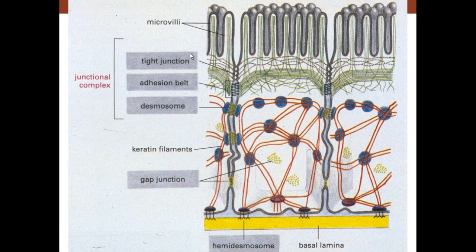The different types of junctions have different associations with filaments. The tight junction — the occluding junction — is the fusion of the plasma membranes of the two cells and is not associated with filaments. The zonula adherens is connected to actin filaments, the same filaments that push up the microvilli. The desmosomes are associated with intermediate filaments or keratin filaments in epithelium. The hemidesmosome attaches the cell to its base, and the desmosome and zonula adherens are all associated with cytoskeletal components.